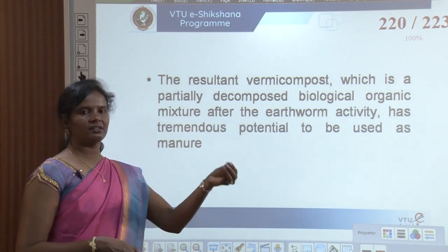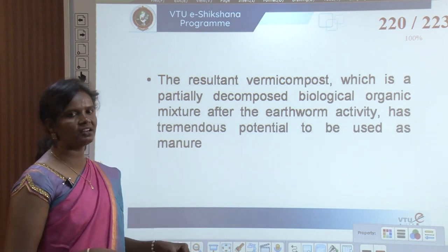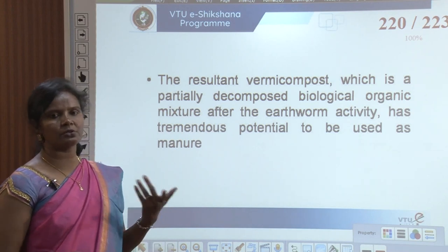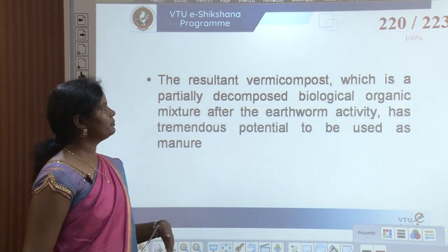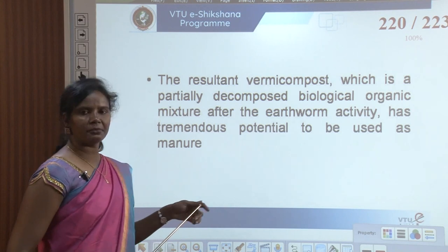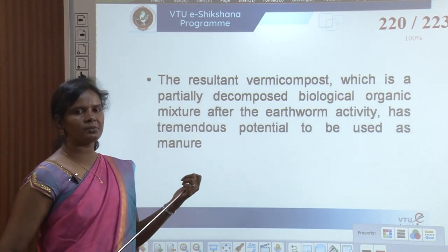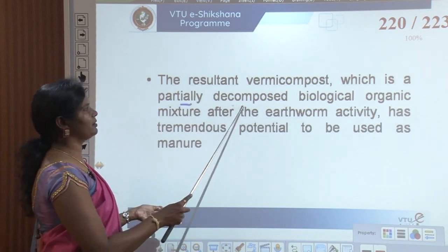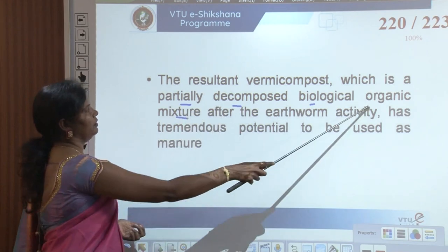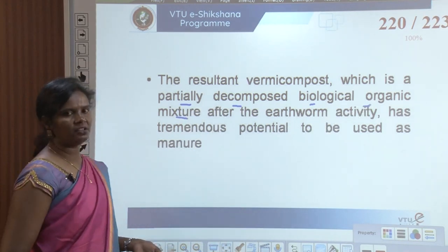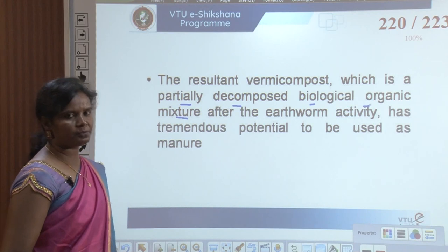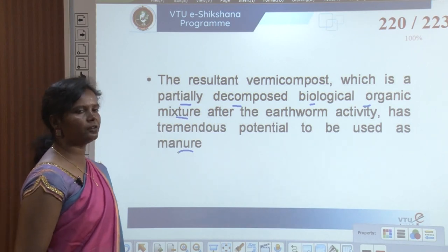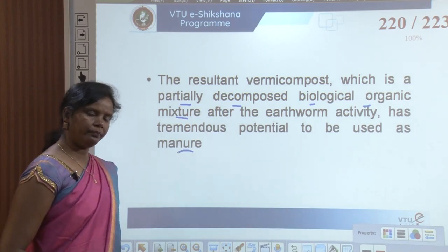There are bins called truss bins where layers of organic waste are put and microorganisms are introduced into them, turning waste into compost. The resultant vermicompost is a partially decomposed biological organic mixture produced after earthworm activity, which has tremendous potential to be used as manure.